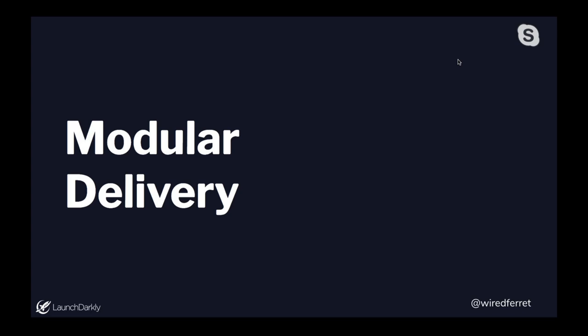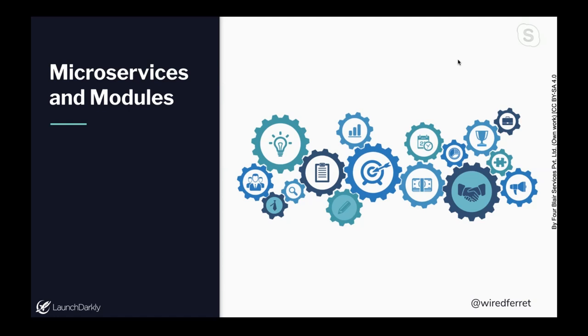Think about modular delivery. Waffle House does waffles or hash browns depending on what's available — apply the same thinking to software. Microservices and modules let you say some things are down but not everything. However, many teams moving from monoliths to microservices are actually designing a distributed monolith — there are still single points of failure. If any one microservice takes down everything, you lose the advantages of microservices. If you only have one database, you just have a distributed monolith; you need more than one for a valid microservice architecture.